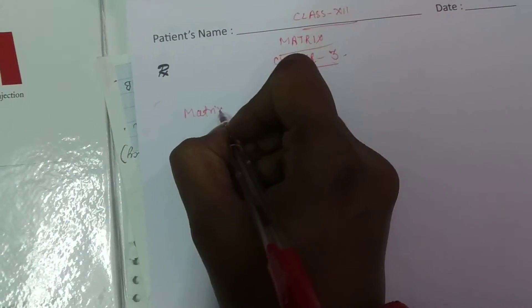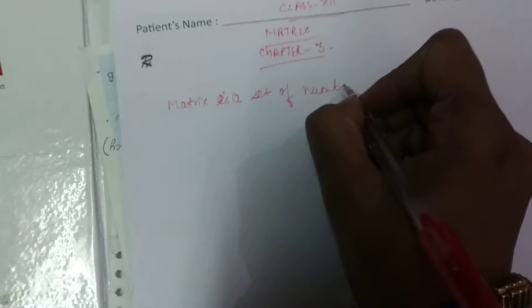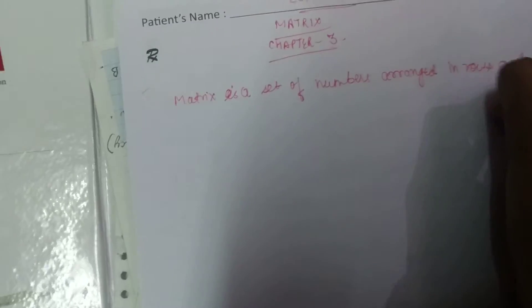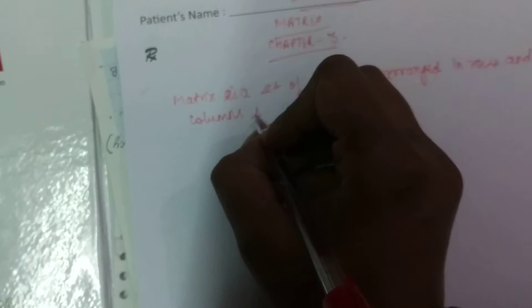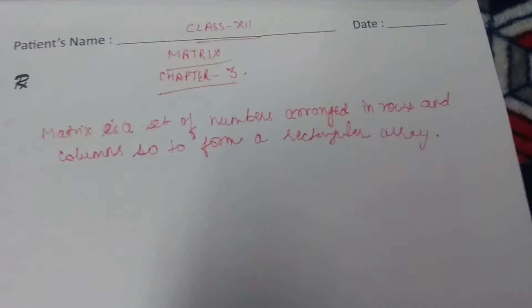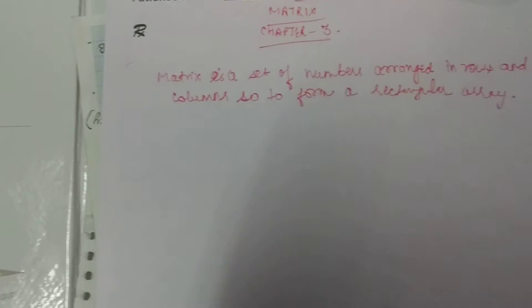First, let's see what is a matrix. Matrix mein numbers ki rows aur columns mein arrangement hoti hai, jise hum rectangular array kehte hain. Matrix is a set of numbers arranged in rows and columns to form a rectangular array. So matrix kya hai — sirf numbers ka arrangement hai rows and columns mein, ussi ko hum kehte hain matrix.